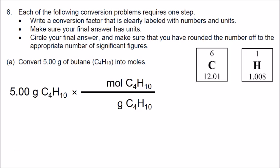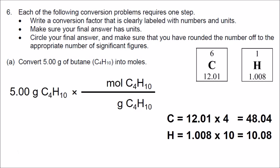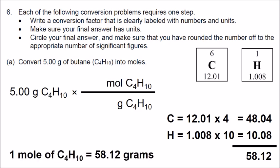Carbon has an atomic mass of 12.01 and hydrogen, 1.008. The formula butane, C4H10, has 4 carbons, so we multiply the atomic mass of carbon times 4, and 10 hydrogens, so we multiply the atomic mass of hydrogen by 10. The total is 58.12. That means there are 58.12 grams of butane for every one mole. So in this conversion factor, we put a 1 on the top next to moles and 58.12 next to grams on the bottom.